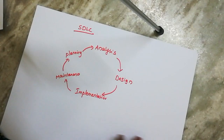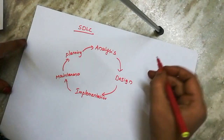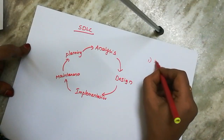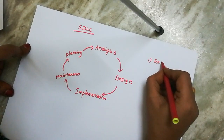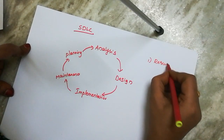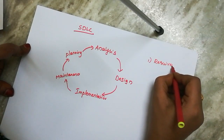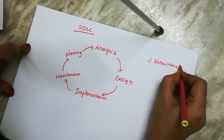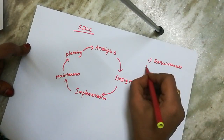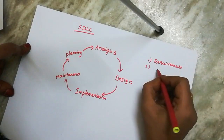This is the life cycle. The first step is requirements. We choose the requirements — that is the first step.